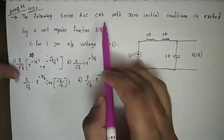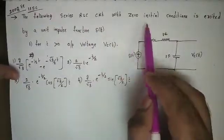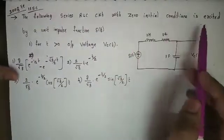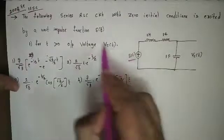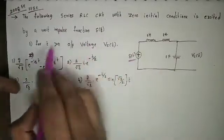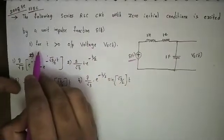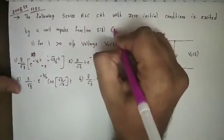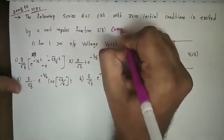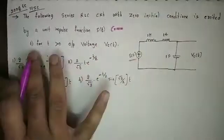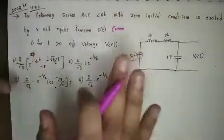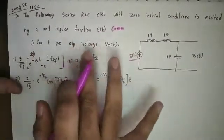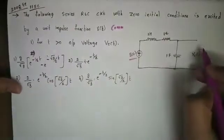The question is: the following series RLC circuit with zero initial conditions is excited by a unit impulse function delta(t). This is a common data question. For t greater than 0, that is transient analysis, the output voltage is Vc.